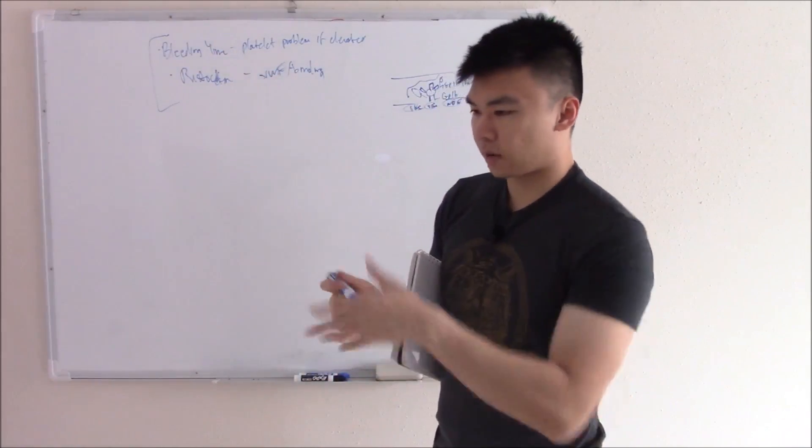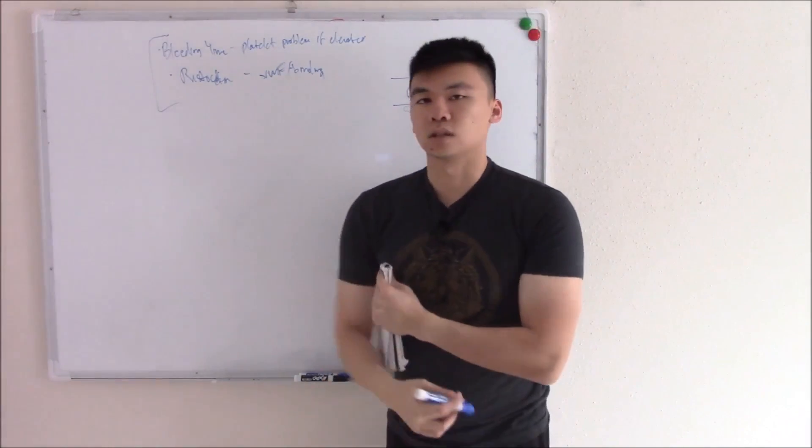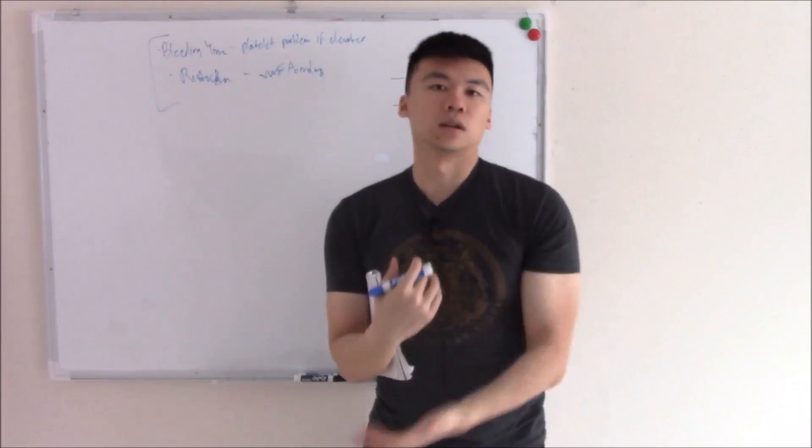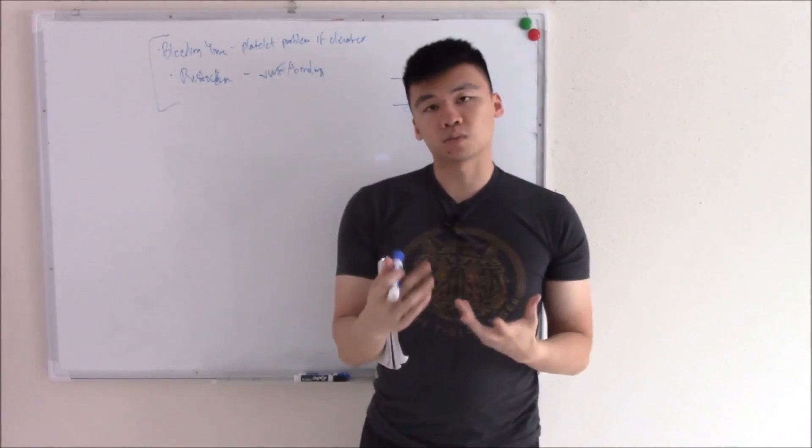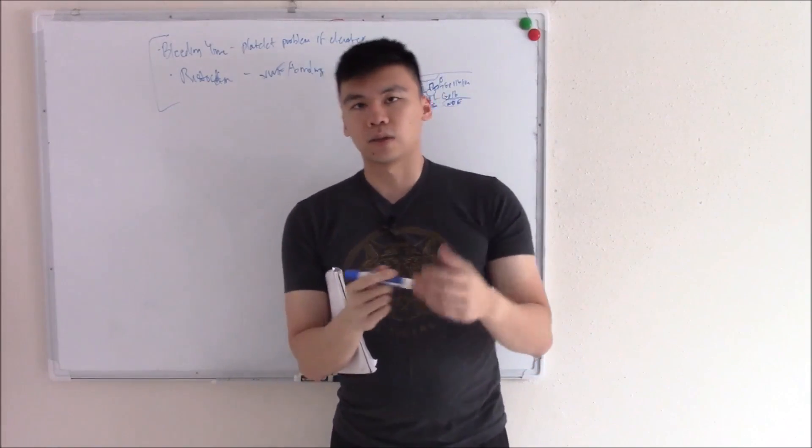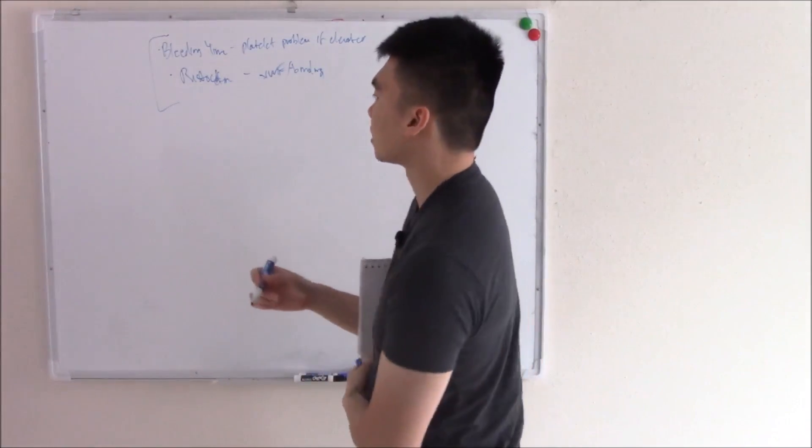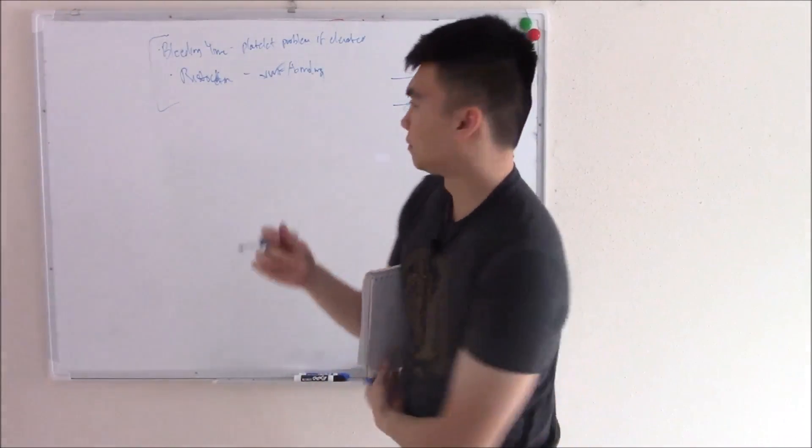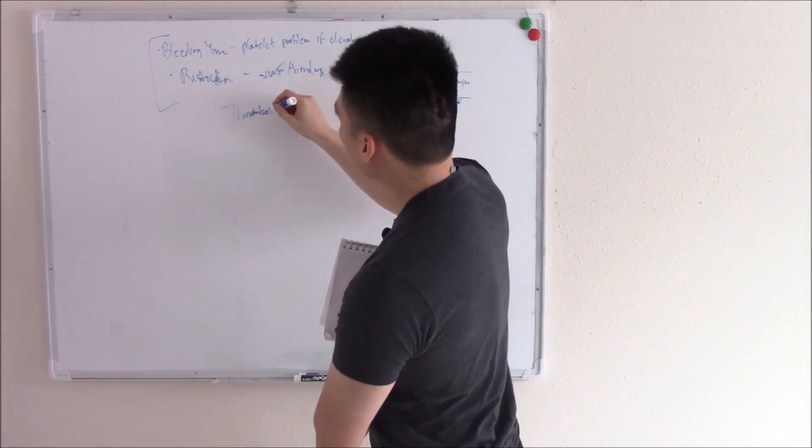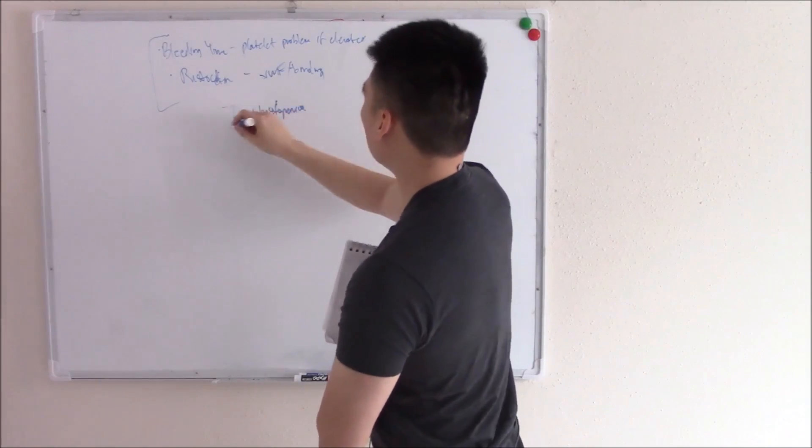Now that we have that background information, we can go into platelet disorders. And there are many things that cause platelet disorders. And when we talk about disorders in heme, we're talking about too much of something or too little of something. Too much of something, too much platelets, we call that thrombocytosis. And thrombocytosis can be caused by things like polycythemia, essential thrombocytosis. We talked about that in previous videos. So that's thrombocytosis. Too little platelets is thrombocytopenia.